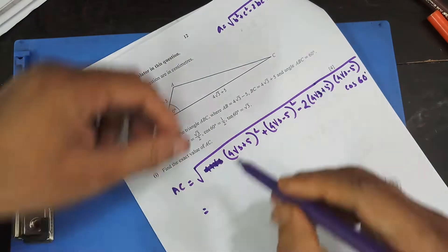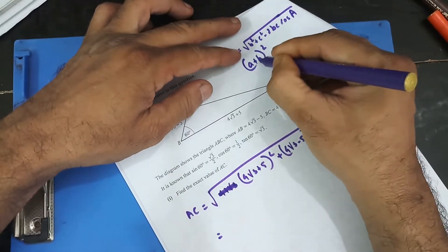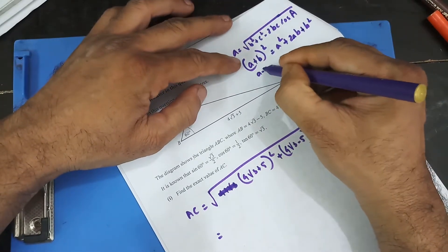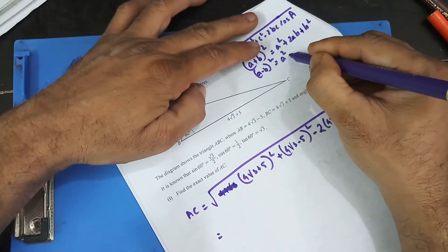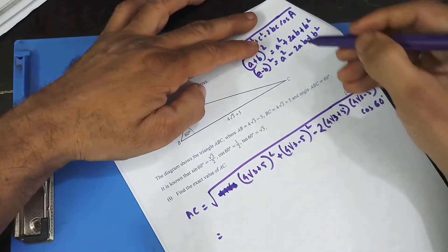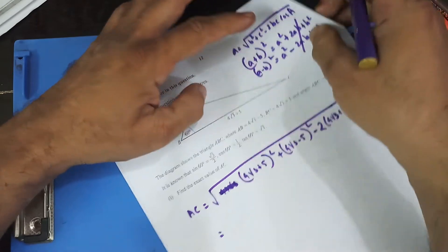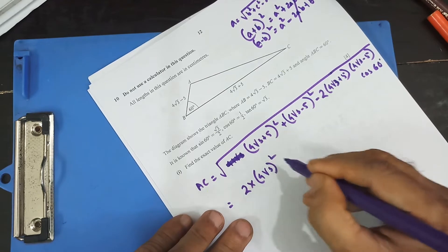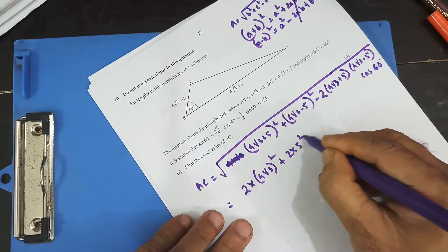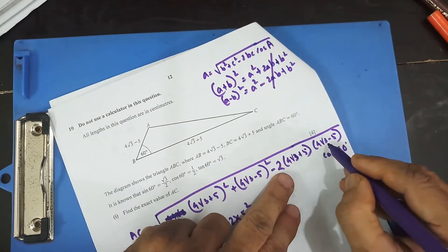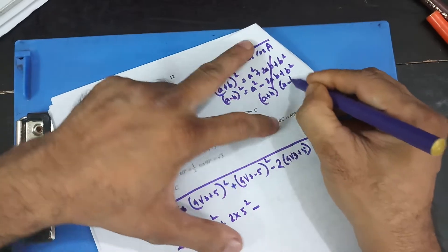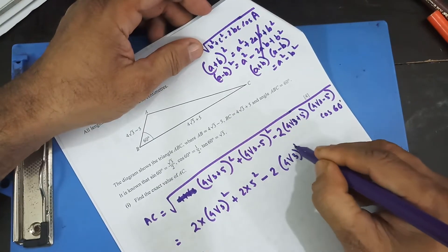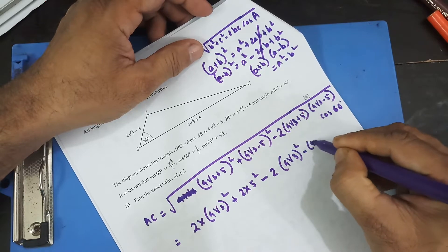This thing is in the form of (a + b)², which can be written as a² + 2ab + b². And this is in the form of (a − b)², which can be written as a² − 2ab + b². You can clearly see these cross out, so I'm going to have double of each. So I can write down 2·(4√3)² + 2·5² minus this one — (4√3 + 5)(4√3 − 5) — which is a² − b², so 2·[(4√3)² − 5²].